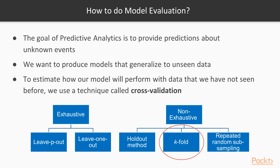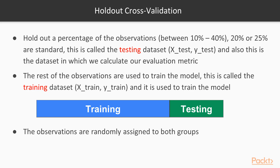Remember that the goal of predictive analytics is to provide predictions about unknown events — we want to produce models that generalize well to unseen data. To estimate how our model will perform with data it hasn't seen before, we use a technique called cross-validation, and there are many methods of cross-validation. So far, we have been doing the holdout method, but in this video we will learn about the k-fold cross-validation method.